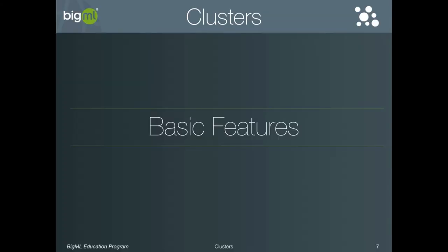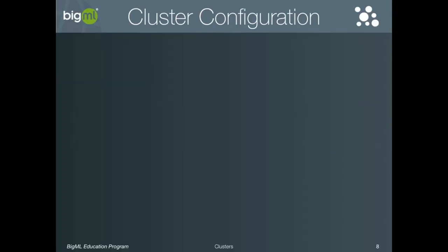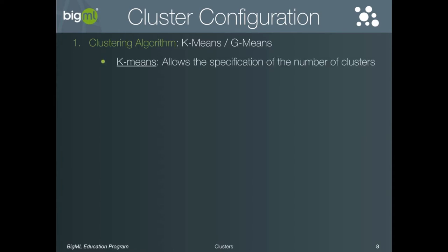Now let's review the basic configuration options for clusters. The first is the clustering algorithm to use — the choices are K-means and G-means. The difference is that K-means allows you to specify the number of cluster groups that you want to find, while G-means uses a special Gaussian test to iteratively find the best number of cluster groups. If you don't know the number of cluster groups you want, then G-means — which is also the one-click default — is the right option.